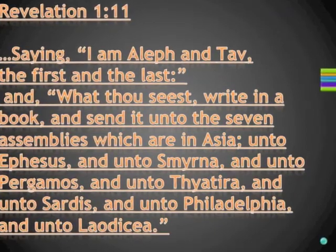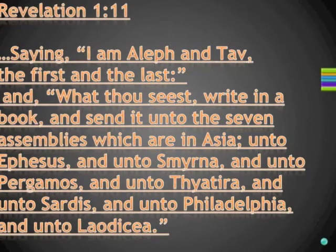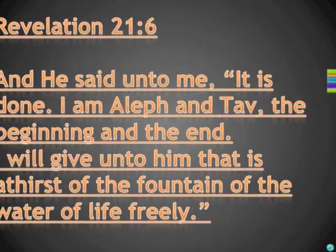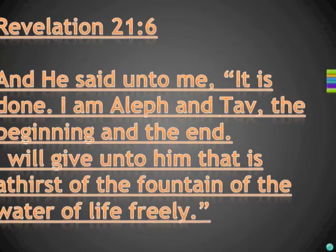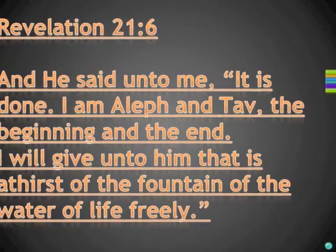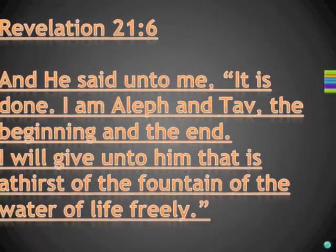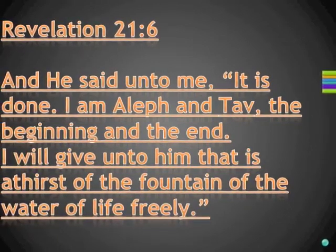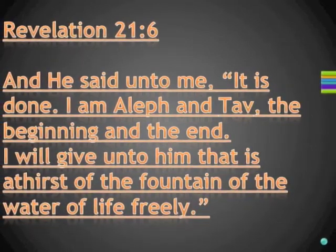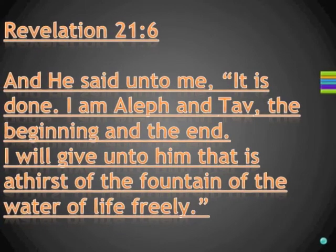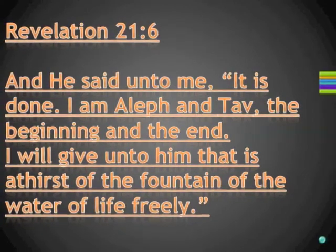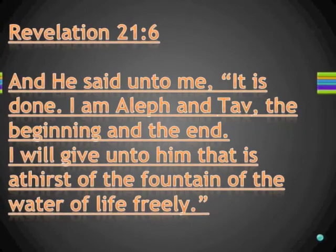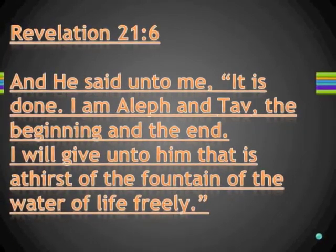Here are three corrected translations from Revelation that are a little more accurate, where Yeshua himself is identifying himself as that word found in Genesis 1:1. Remember that the Aleph and the Tav are the first and the last letters in the Hebrew alphabet. So he is definitely identifying himself as that mysterious word that even the Hebrews didn't know what it meant in the very beginning, in the very first verse of Genesis.